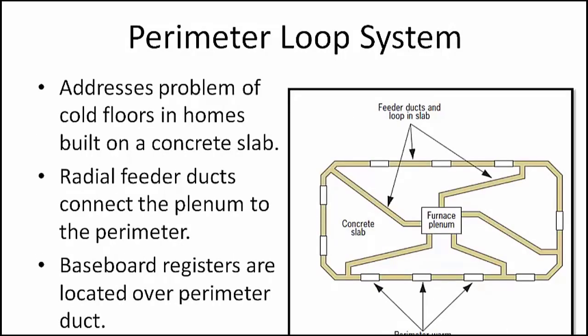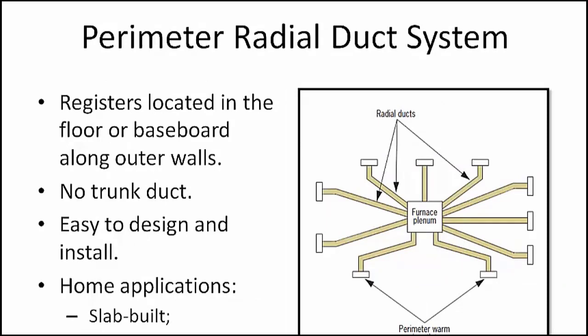The perimeter loop duct arrangement, as shown here, addresses the problem of cold floors in winter in a house built on a concrete slab directly laid on the ground. Warm air is directed downward from the furnace, which usually sits on the ground floor, to a subfloor plenum. Radial feeder ducts lead from the plenum to the perimeter ductwork, and all of the ducts are embedded in the concrete slab. In winter, the warm air flowing in the duct keeps the floor warm. The baseboard registers are located directly over the perimeter duct along the outer walls or in the floor next to the walls, and warm air is discharged upward into the rooms. The same ducts can be successfully adapted to summer cooling.